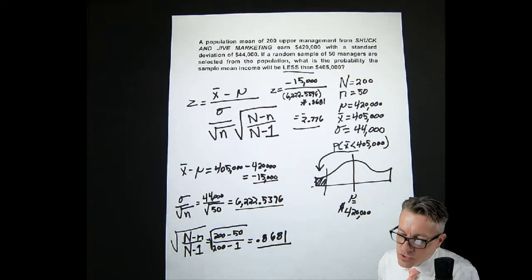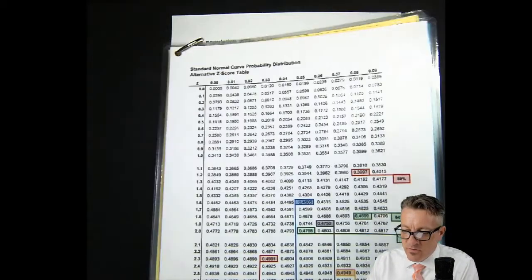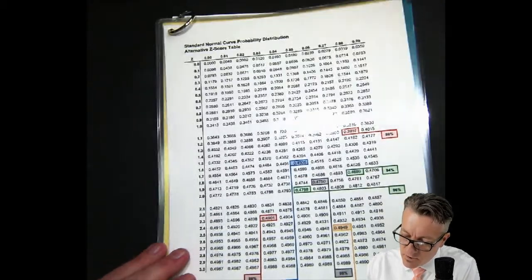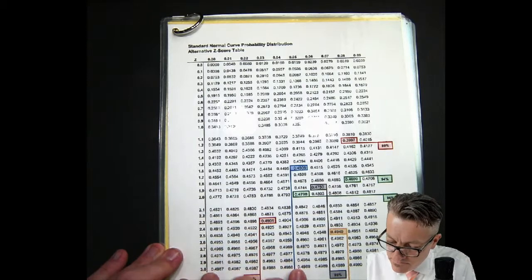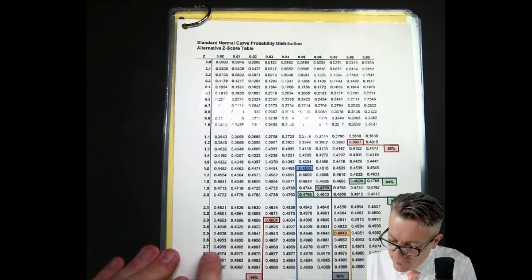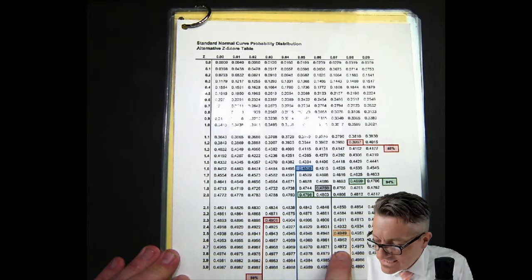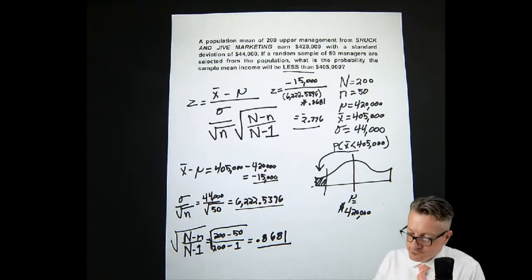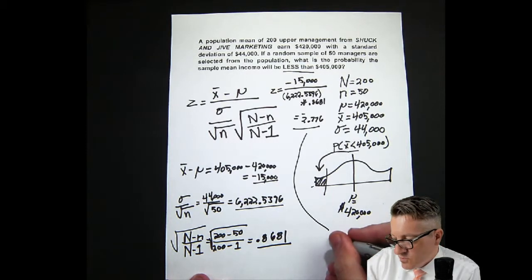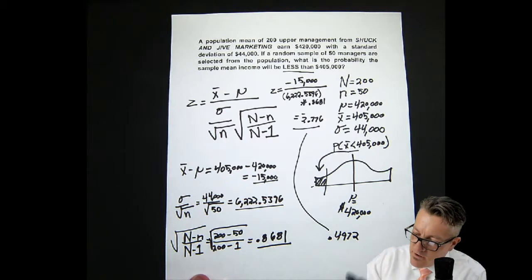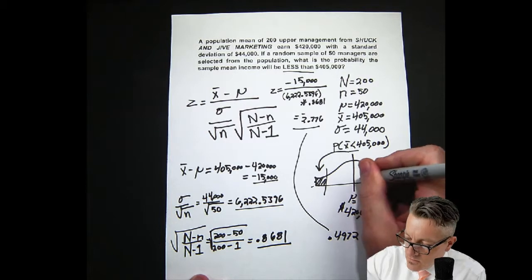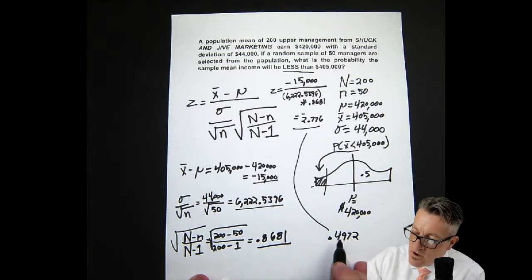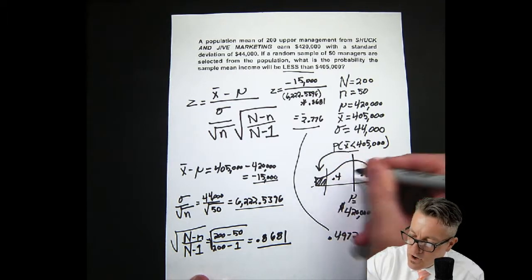Our Z is negative 2.776. Since we don't have negatives on the table, it shows we are on the left side of mu. We look up 2.77 and we can only go to two decimal places, so 2.77 gives us 0.4972. That value, 0.4972, goes in the left tail area near our X-bar of $405,000.